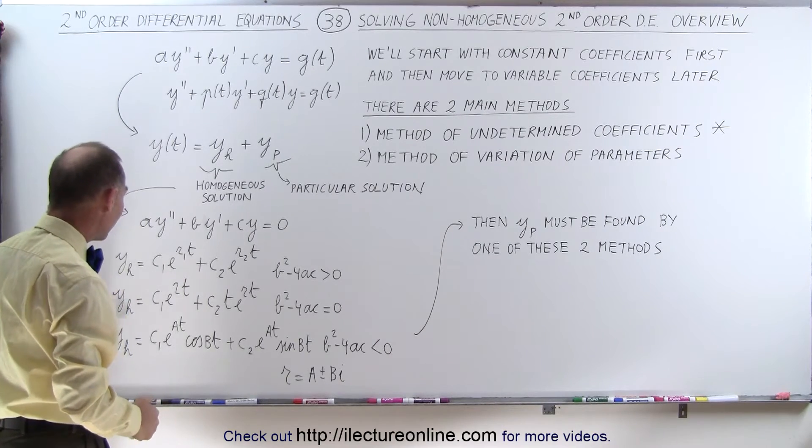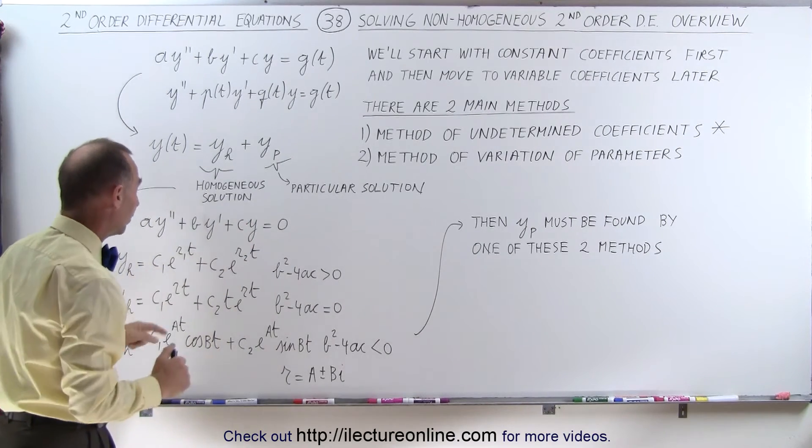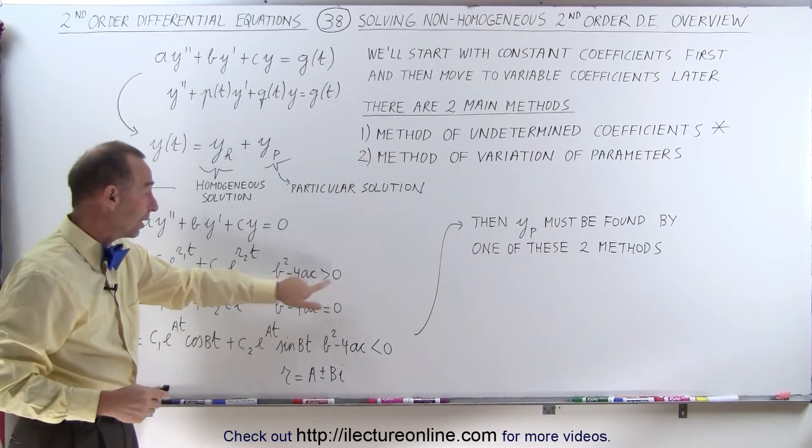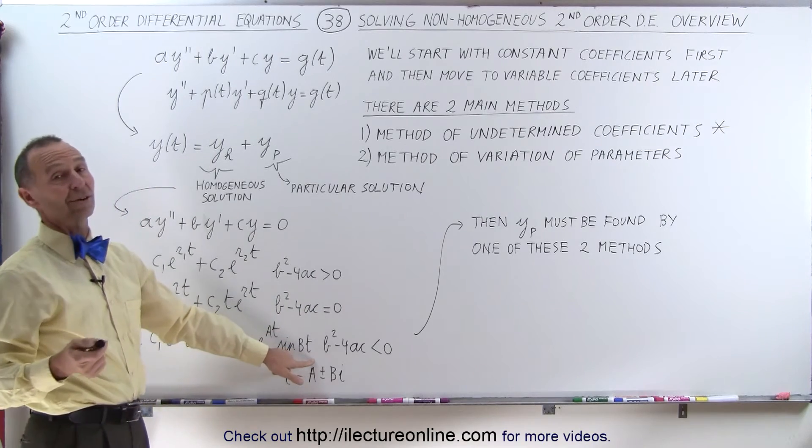And we have three different types of solutions to the homogeneous part, depending upon whether or not b squared minus 4ac is greater than zero, equal to zero, or less than zero.